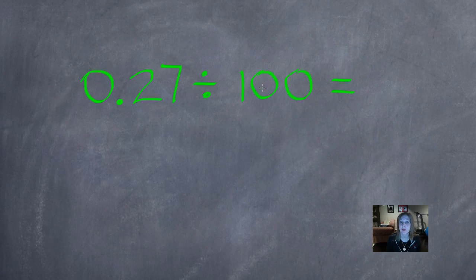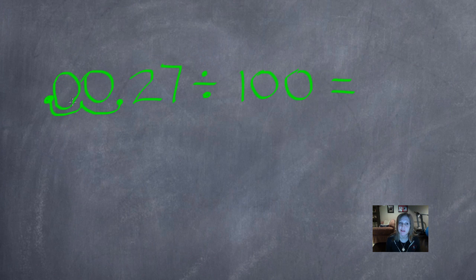So we count our zeros. We have one, two zeros. So we're going to move our decimal two places to the left. Now when I do that, remember sometimes I don't have a digit there. So when I move it, one, two, I leave an empty space. So I've got to annex a zero to fill that place value position.